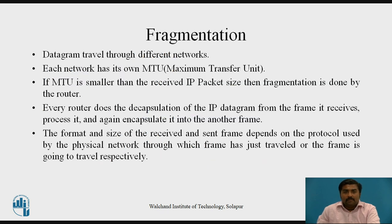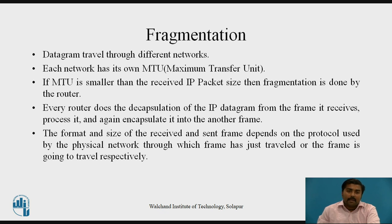Fragmentation occurs when a datagram travels through different networks, hopping from one router to another. Each network has its own Maximum Transfer Unit, or MTU. If the MTU is smaller than the received packet size, fragmentation is done — the entire packet is divided into smaller packets. Every router decapsulates the IP datagram from the received frame, processes it, and re-encapsulates it into another frame. The format and size of the frames depend on the protocol used by the physical network.